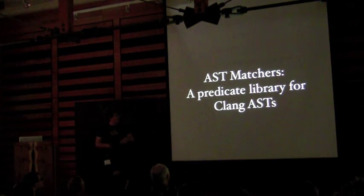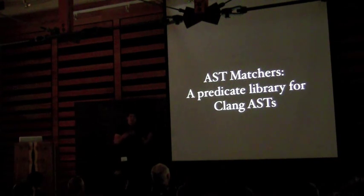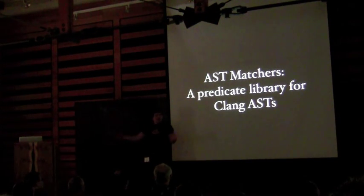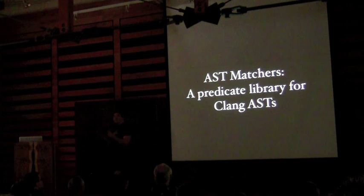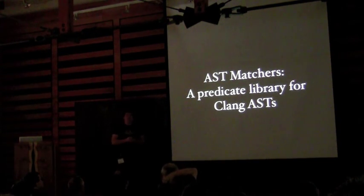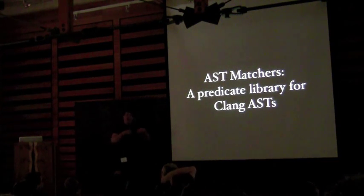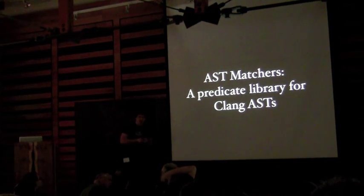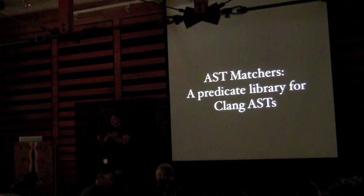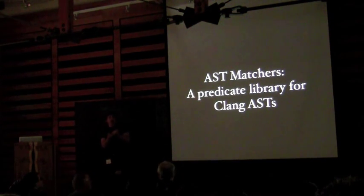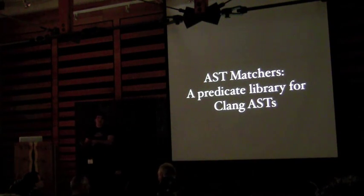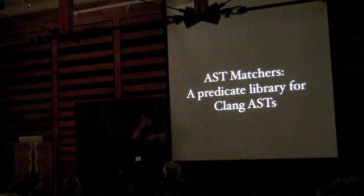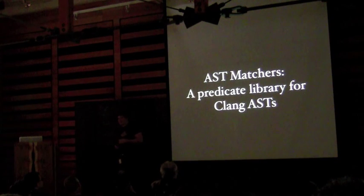The AST matcher library is a library of predicates over Clang's ASTs. We formulate it as a predicate library so we can build up a very large predicate without looking at any source code, then hand it off to the infrastructure which runs it over source code in an optimized way, finds places that structurally match, and calls back to your actual code to handle it. The predicate library makes it much easier to compose what you're trying to match structurally — like a function-level algorithm — without looping over data structures.